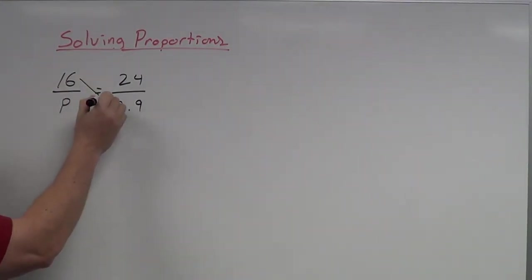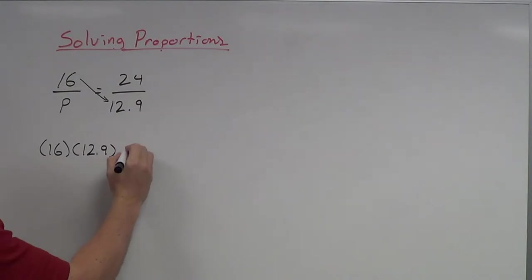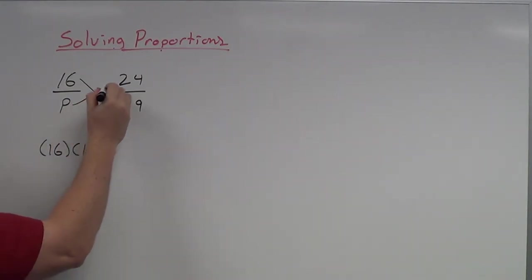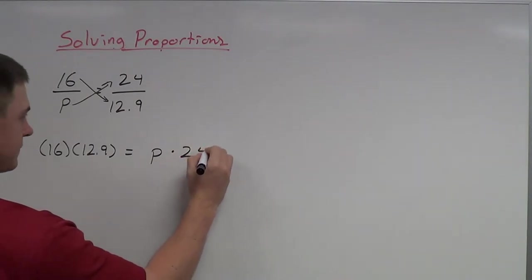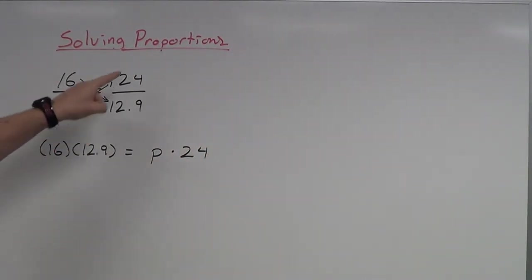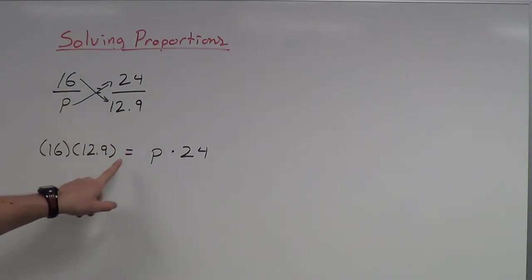I'm going to take 16 and 12.9 and multiply them together. And I'm going to take p and 24 and multiply them together. This is what we mean by cross multiply. It makes an x when you multiply these numbers. So 16 times 12.9 is equal to p times 24.